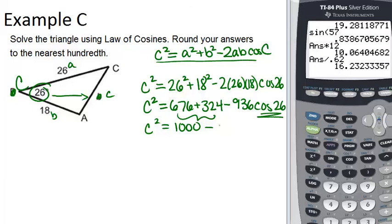And you should get 605.52, approximately. Now you want to subtract, and you get that C squared equals 394.48.